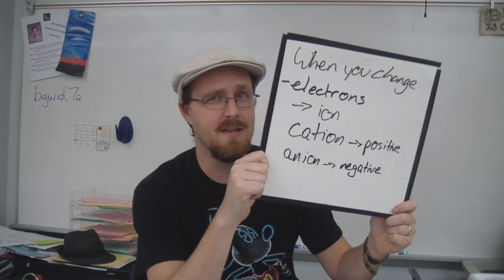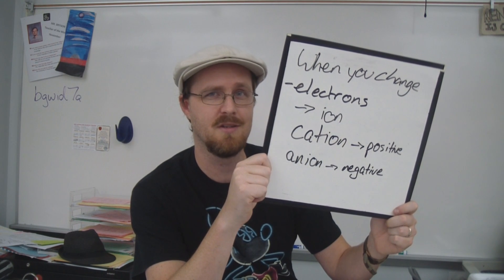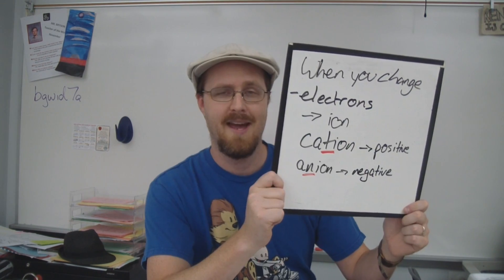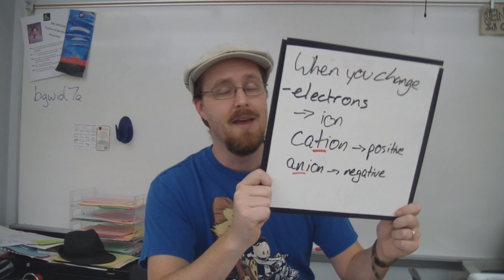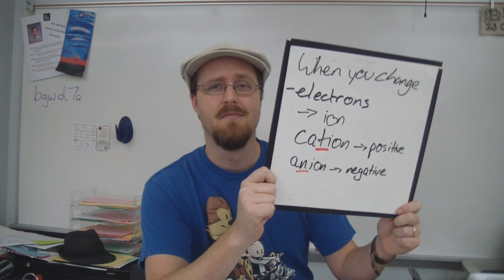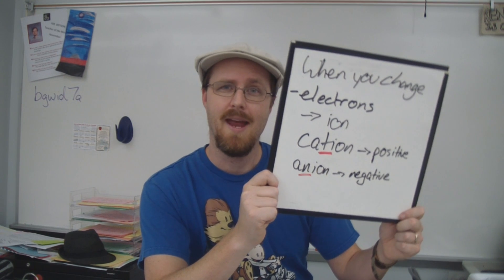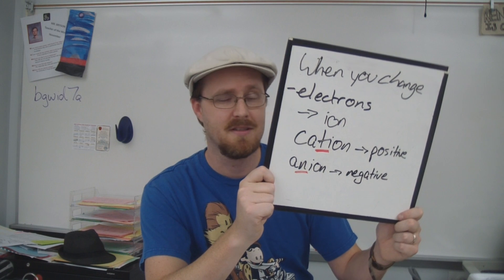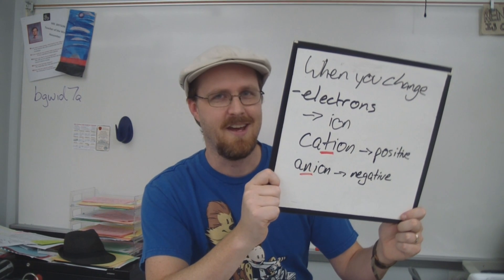Now, there's actually a very easy way to remember which one is which. The word cation has a T right in the middle of it, and that T kind of looks like a plus sign — there's your positive ion. The word anion has an N right there in the front, and N, as we all know, stands for negative.